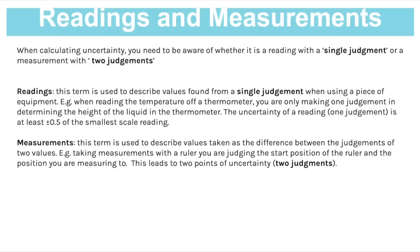The uncertainty of a reading with one judgment is plus or minus half of the smallest scale division on that reading. So if your thermometer has graduations of one degree Celsius, your uncertainty on that reading would be ±0.5°C. Most thermometers have graduations of one degree Celsius, so it's pretty much always going to be ±0.5°C for a thermometer.